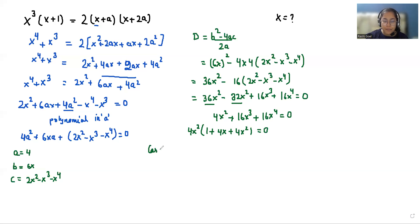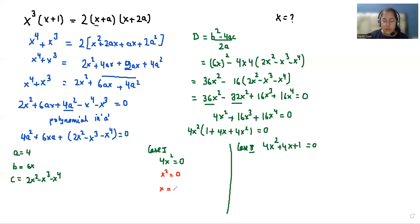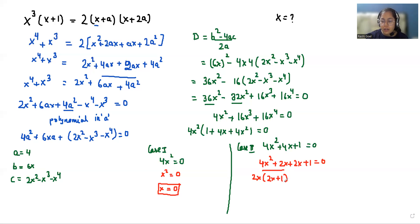Now we have two cases. Case 1: 4x² = 0, so x = 0. Case 2: 4x² + 4x + 1 = 0. We can write the middle term as 4x² + 2x + 2x + 1 = 0. Taking 2x common from the first two terms gives 2x(2x+1) + 1(2x+1) = 0. So (2x+1) is common, leaving (2x+1)(2x+1) = 0.